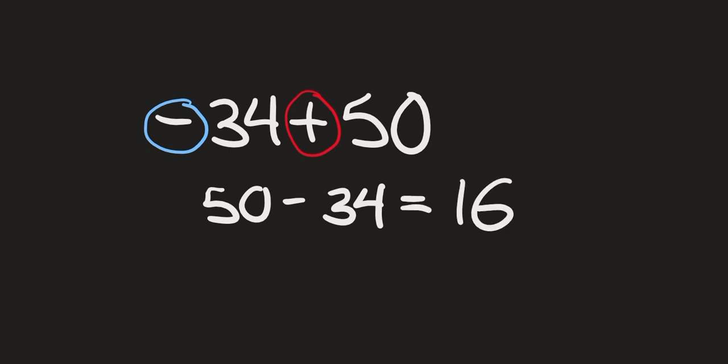Next we have negative 34 plus 50. We ask ourselves: do the two numbers have the same sign or different signs? 34 has a negative sign in front and 50 has a positive sign in front, so the two signs are different. That means we're going to subtract the smaller number from the bigger number — 50 minus 34 is 16. Our answer keeps the sign of the bigger number; since 50 is bigger, our answer is positive 16.